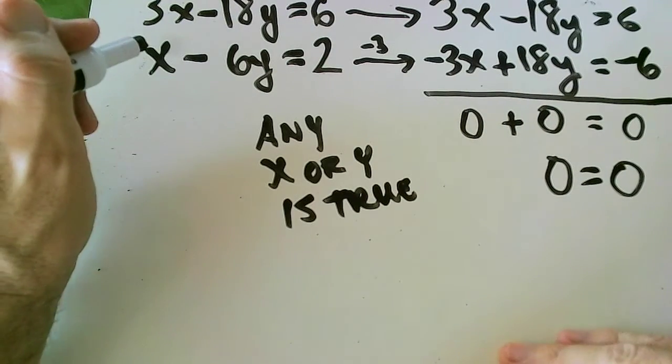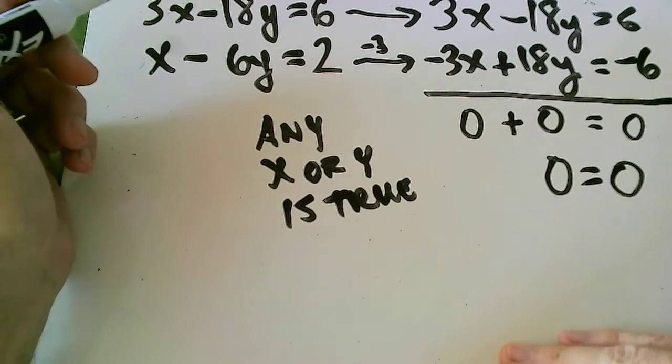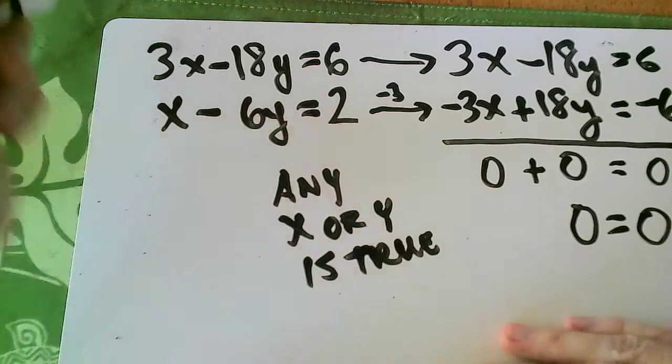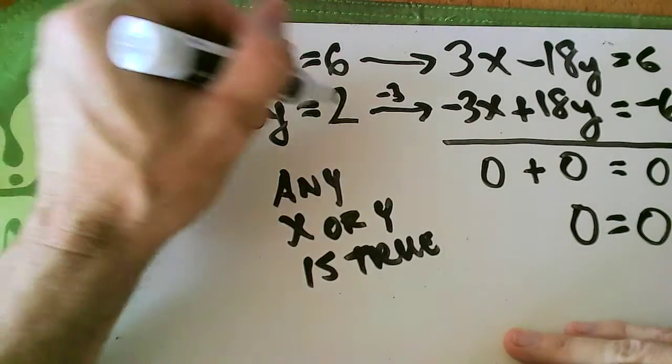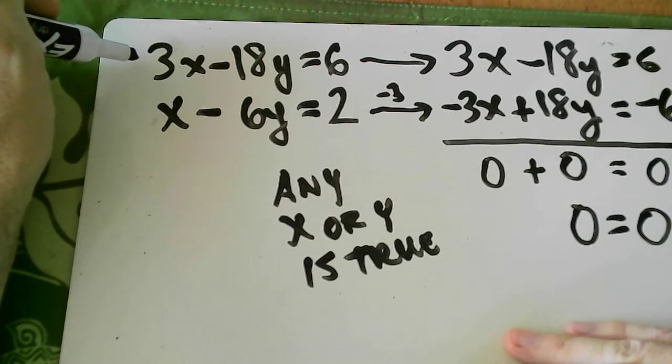And the reason that is, is that these are the same line. So if you notice, if you go back to this original equation, if I multiply the bottom by 3, I will get the same exact equation.